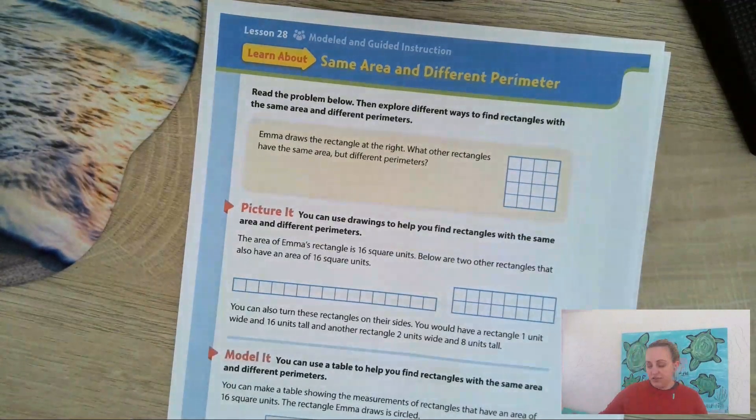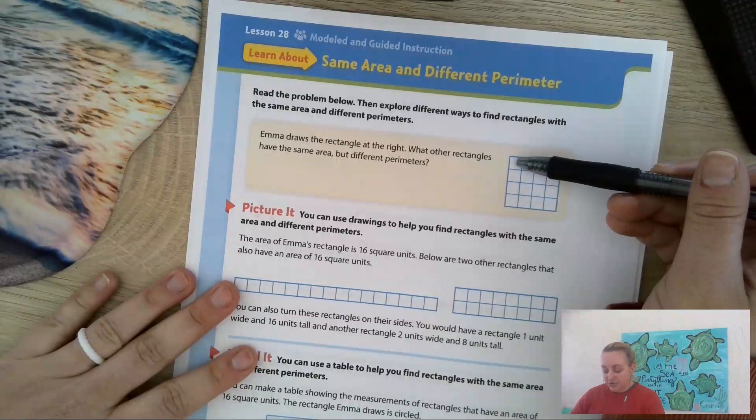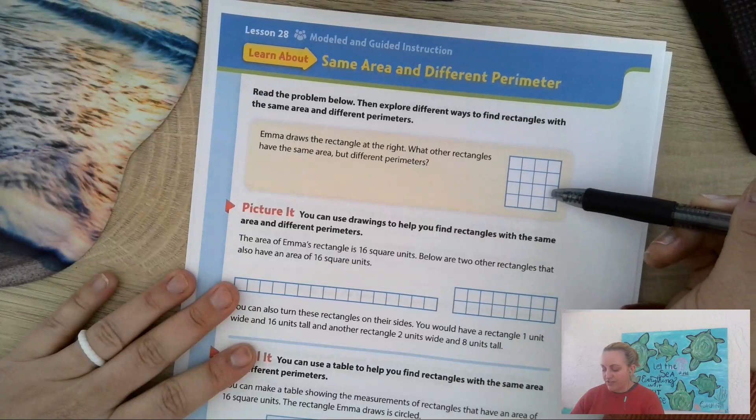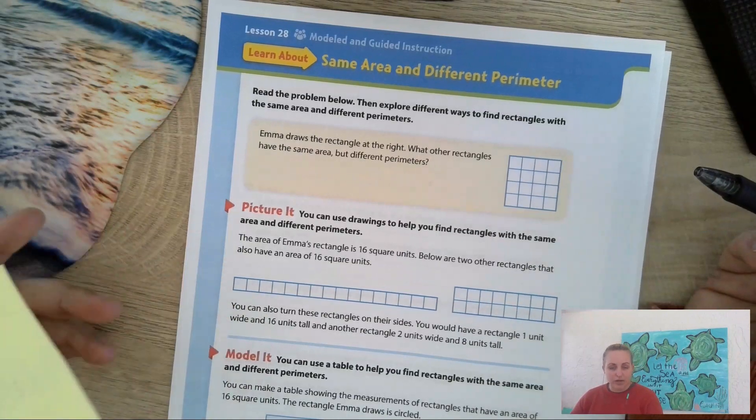So to figure out the area of this rectangle over here I could simply just count the squares. 1, 2, 3, 4, 5, 6, 7, 8, 9, 10, 11, 12, 13, 14, 15, 16. 16 square units.